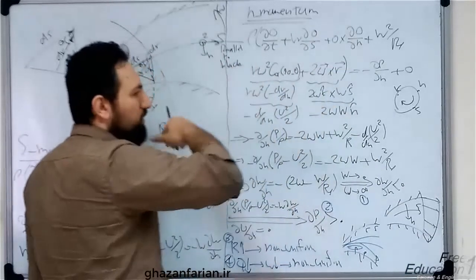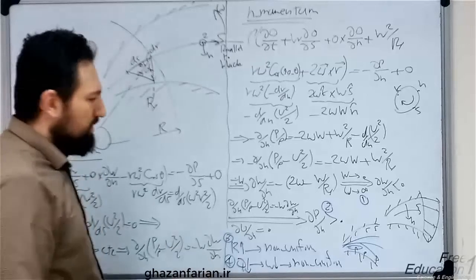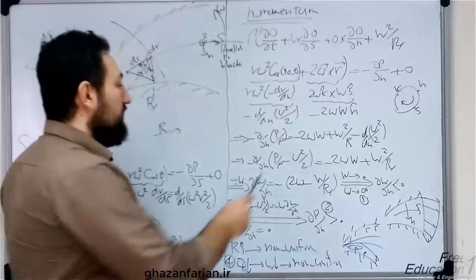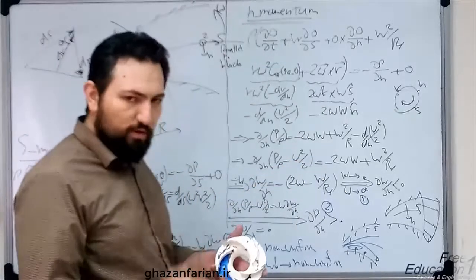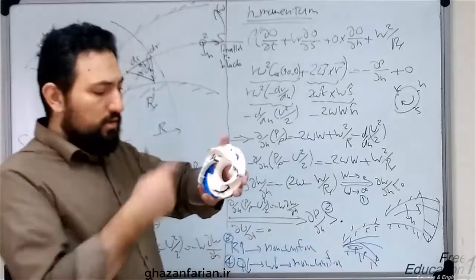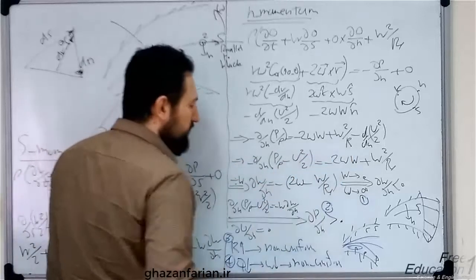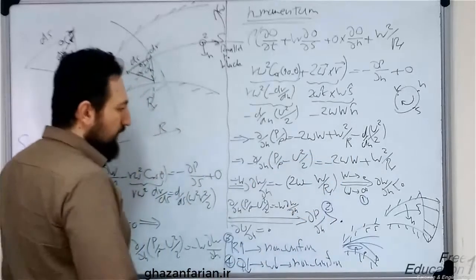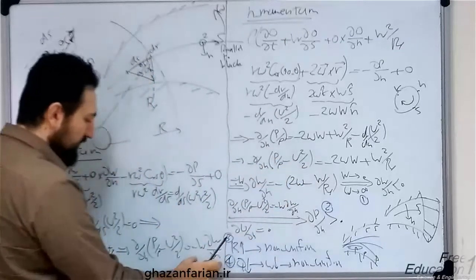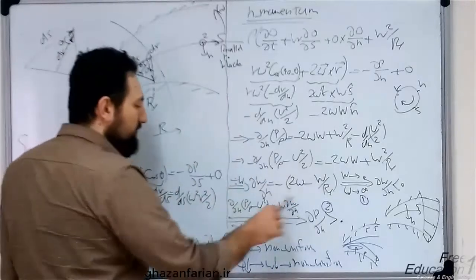You can divide the equation by density (which is constant), and combine the pressure gradient terms on one side. The term inside the derivative is completely similar to the corresponding term from the s-momentum derivation, so you can substitute and simplify. Dividing both sides by W, you can easily find the final relation.